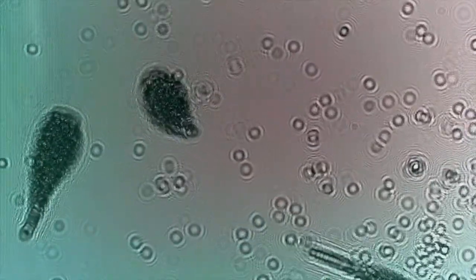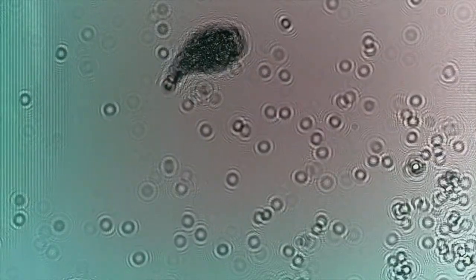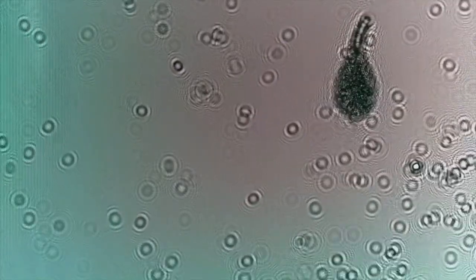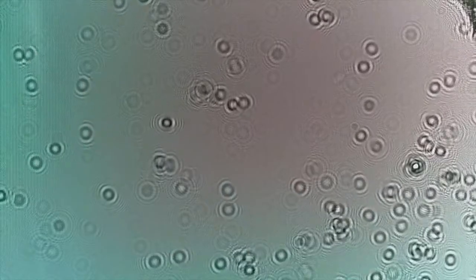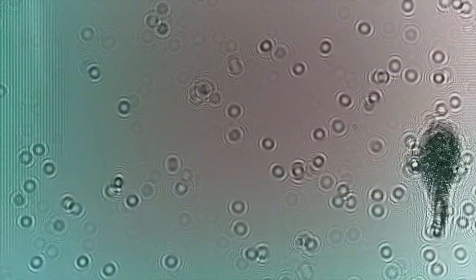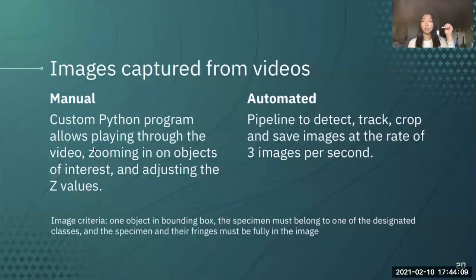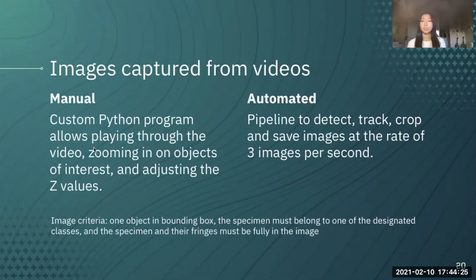The videos we captured are super interesting — you can see the little critters swimming around. One interesting thing about plankton is that though they can't really swim against a strong current like in the ocean, when you put them in still water they'll move around pretty quickly. From these videos, we collected some still images to do the autofocusing on. There were two ways by which we captured these images: first, a manual way involving a custom Python program that allowed us to play through the video, zoom in on specific objects of interest, and adjust the Z value. We also had an automated pipeline which detected objects in the frame, tracked them, and cropped and saved images at three images per second. A human still had to determine the true Z for the automated images.